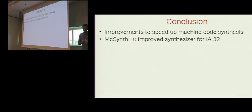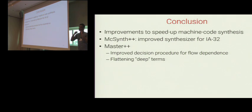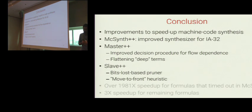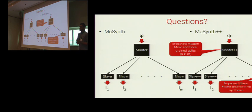In conclusion, I presented several improvements to our existing machine code synthesis algorithm and presented MixSynth++, an improved synthesizer for IA-32. MixSynth++ uses an improved master with a better decision procedure for flow dependence and flattens deep terms in formulas, splitting an input QFBV formula into more sub-formulas. The slave uses an extra pruner and the move-to-front heuristic to find implementations faster. MixSynth++ timed out on only 2 out of 50 formulas, producing a speedup of over 1981 times on hard formulas and 3 times on the rest. That concludes my talk and I am ready to take questions.